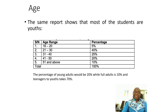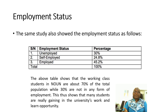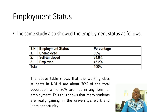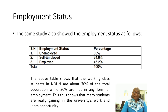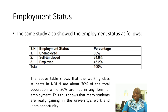In terms of employment status, the same study shows that 30 percent are unemployed, 24.8 percent are self-employed, and 45.2 percent are fully employed. This means we have about 70 percent working class while 30 percent are not working. That shows you that a lot of your peers will be in the working class.